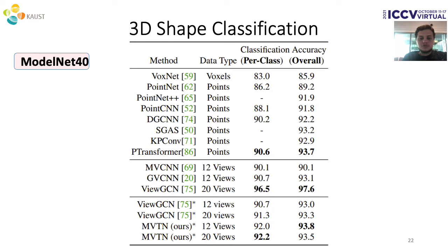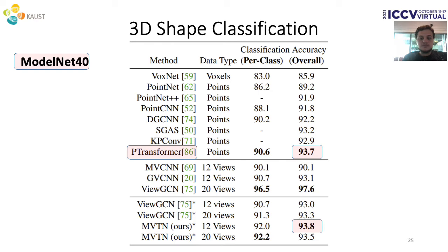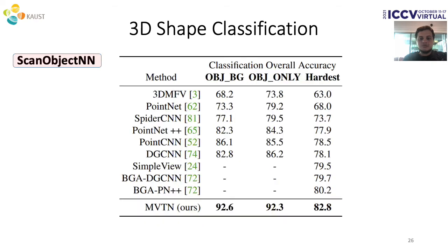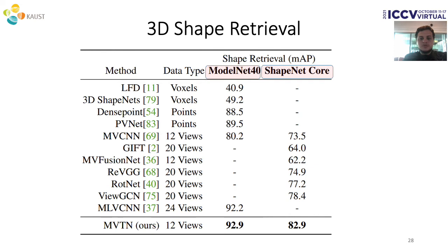Our ModelNet40 results show competitive performance. Our MVTN achieves higher overall accuracy than state-of-the-art ViewGCN with 93.8%, and even higher than Point Transformer from this ICCV. On the realistic ScanObjectNN dataset, we achieve state-of-the-art on all 3 variants, with up to 6% improvement in the case where background is combined with the object. On 3D shape retrieval on both ModelNet40 and ShapeNet Core 55, MVTN sets new state-of-the-art performance on both datasets in terms of retrieval mean AP.